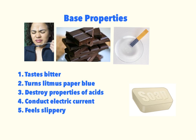Bases turn litmus paper blue. Litmus paper that has been turned red by an acid will turn blue when put in a base. A way to remember this: base starts with B — base, bitter, blue. Three B's. Bases also destroy the properties of acids; when added to acids, that's called neutralization, just like acids do to bases. They conduct electric current because they produce charged particles in aqueous solution. Something unique to bases is that they feel slippery — like soap. Soap is slippery because it dissolves the fatty acids and oils from your skin, cutting down on friction.